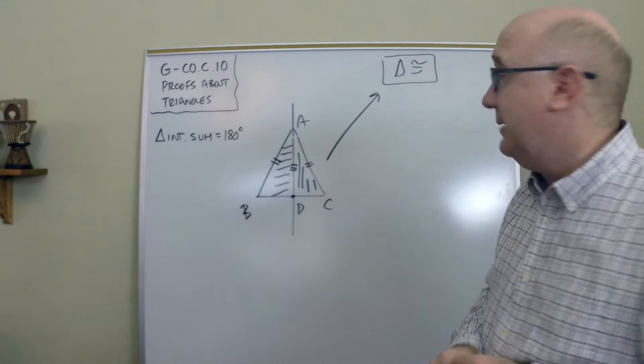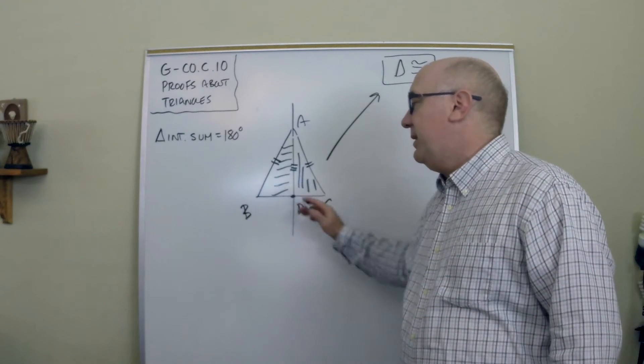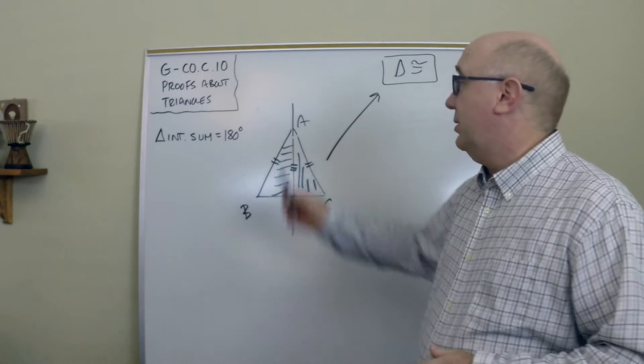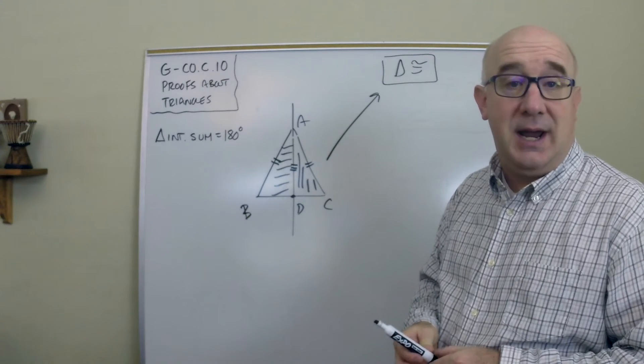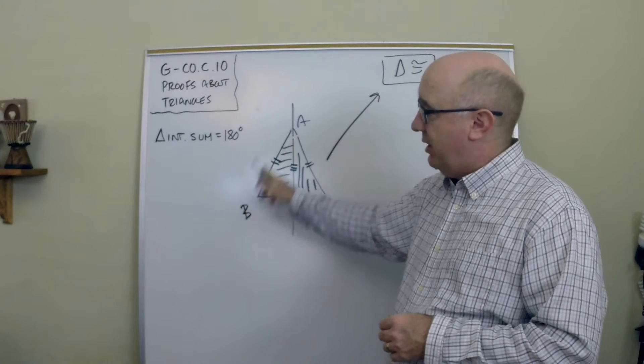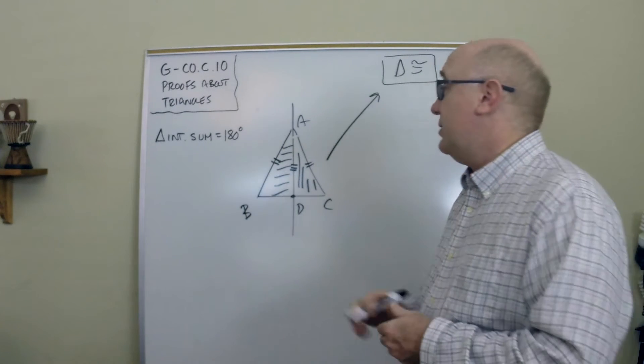And then you would know that the perpendicular bisector, which has to go through A, the perpendicular bisector BC has to go through A. Because all points in the perpendicular bisector are equidistant and those are equidistant to B and C. So this would be a right angle.